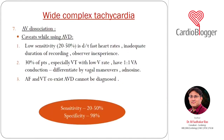Caveats of AV dissociation: sensitivity is low because at very fast heart rates (250–300 bpm) P waves are hard to identify; inadequate recording duration may miss it; observer experience matters greatly; 30% of VT patients with slow ventricular rate have 1:1 VA conduction, making AV dissociation impossible to detect; and when AF and VT coexist, AV dissociation cannot be diagnosed.